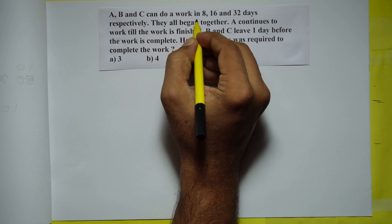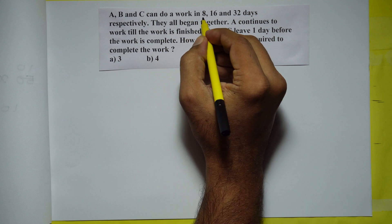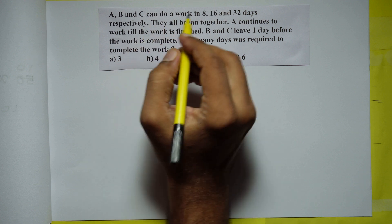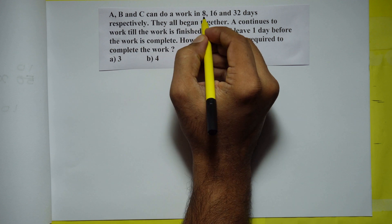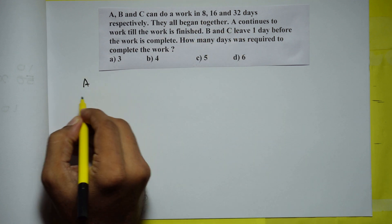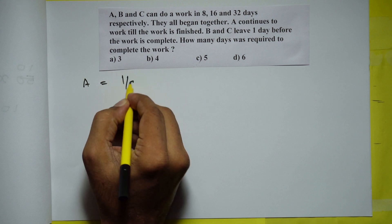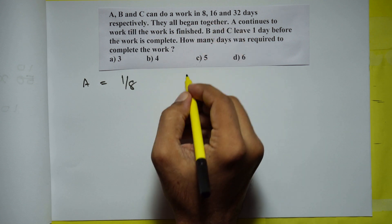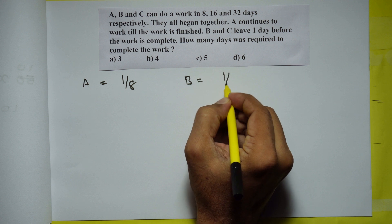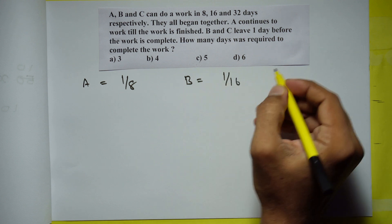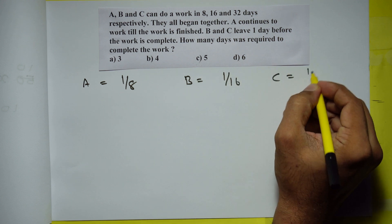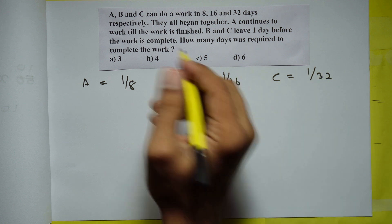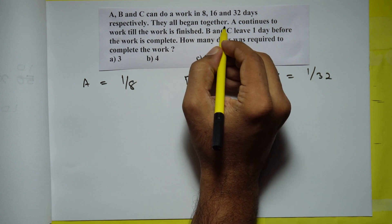A, B and C can do a work in 8, 16 and 32 days respectively. So A can do a job in 8 days, meaning every day A will do 1/8th of the work. B can do a job in 16 days, so every day B will do 1/16th of the work. And every day C will do 1/32 part of the work. They all began together.